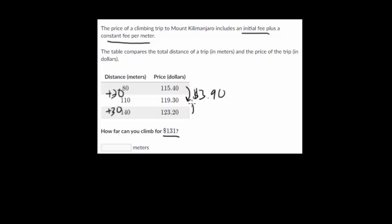And again, it's almost $4, but $0.10 less. So we're going up by $3.90. So every time we go 30 meters more, we are charged an extra $3.90.